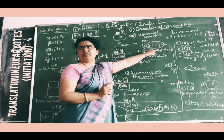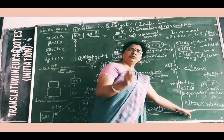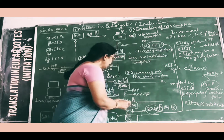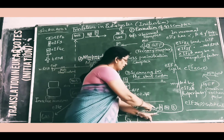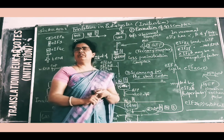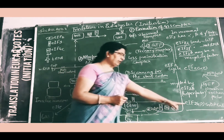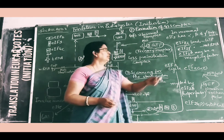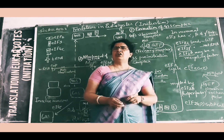The formation of the EIF2-alpha-P · GDP · GEF complex prevents EIF2 from exchanging GDP for GTP. Since EIF2-GTP cannot be formed, the ternary complex cannot be assembled, and thus the initiation of translation is inhibited. This is how phosphorylation of the alpha subunit of EIF2 regulates and prevents protein synthesis under conditions such as viral infection or cellular stress.